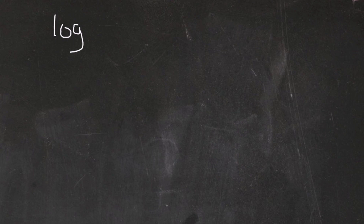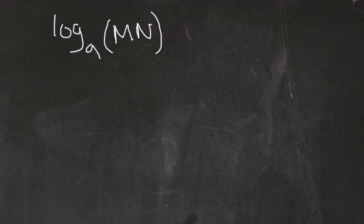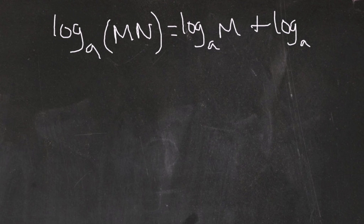To express a single logarithm as a sum or difference, we use two properties. The first property tells us that if we have a logarithm with base a and inside that logarithm we have a product of two numbers — two terms that are multiplying each other — we can rewrite that single logarithm as a sum of logarithms. Multiplication relates with addition, so we get two separate logs with the same base added together.